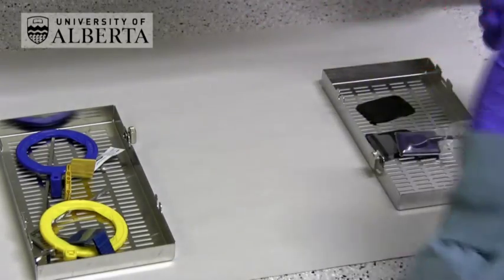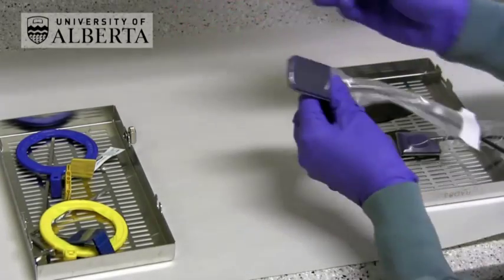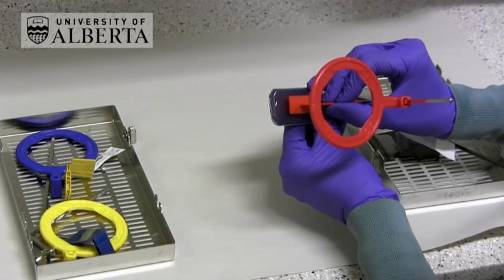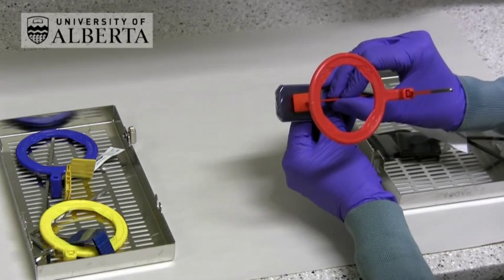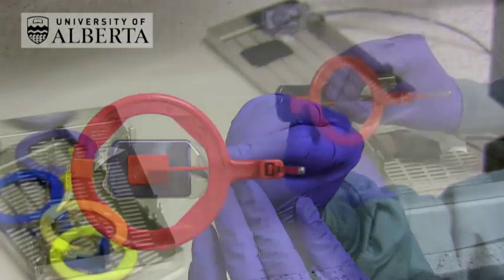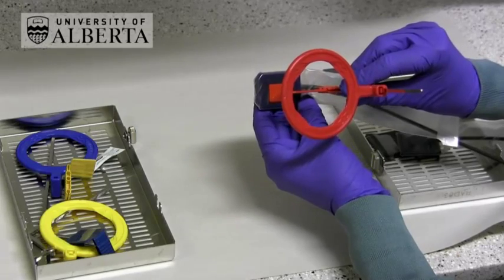If you're using a direct sensor we tend to use a size 2 for a bite wing examination in an adult. Stick the adhesive area, not dead centre on the sensor but slightly more towards where the mandibular teeth will be. This ensures that you're going to get an adequate amount of maxillary bone showing.